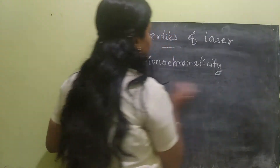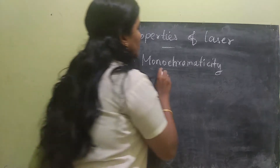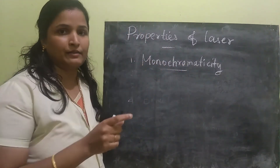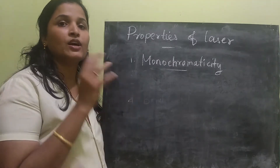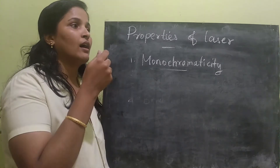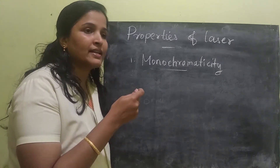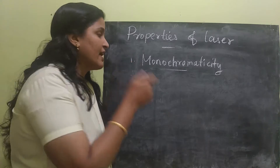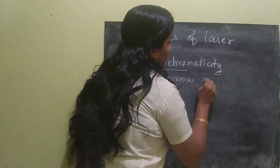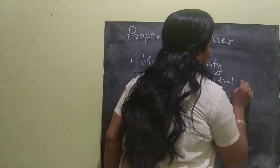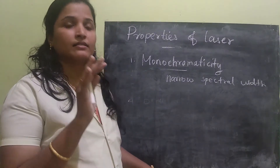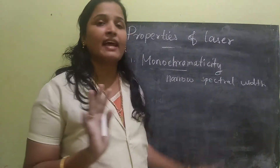So first is monochromaticity. The name itself tells us — mono means single, chrome means color. So the laser is having a single color. Otherwise we can say monochromaticity means we have a very narrow spectral width. Technically, monochromaticity means the laser is having a very narrow spectral width.